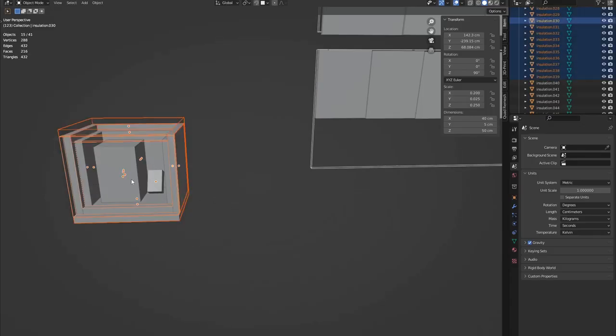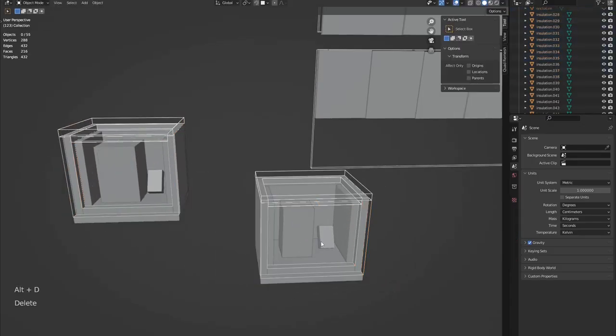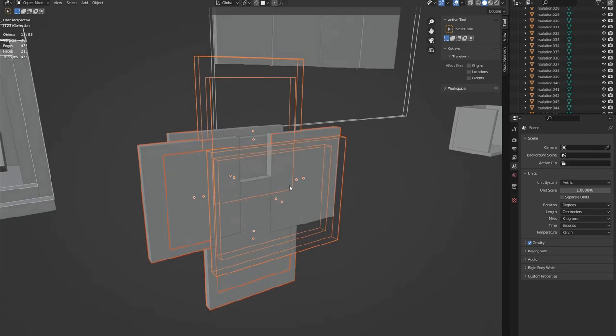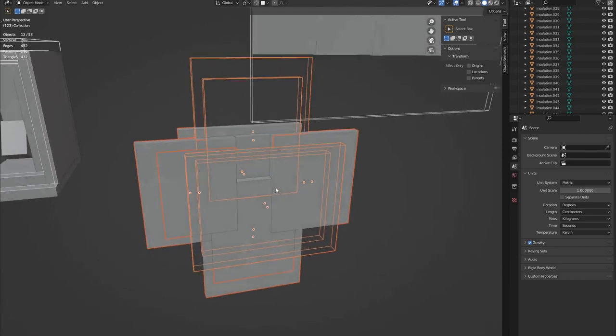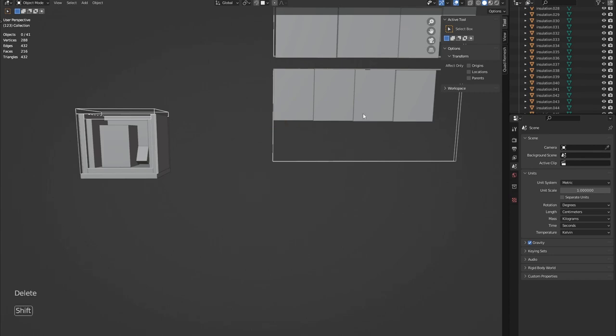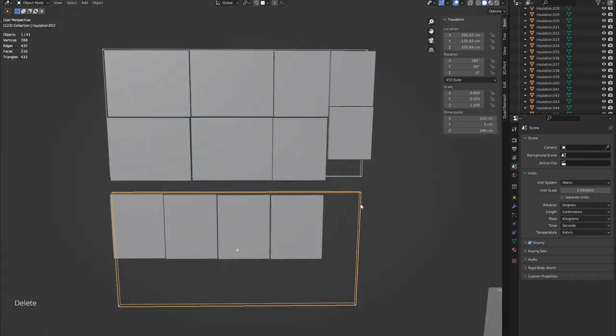Once we have an idea of what we're building, make a duplicate of all the panels and hit Alt+R to reset the rotation. The sheet size of this insulation is 2400 by 1200, so we can lay the parts out to see how to efficiently use it. Looks like we will need two sheets for this build with some left spare.